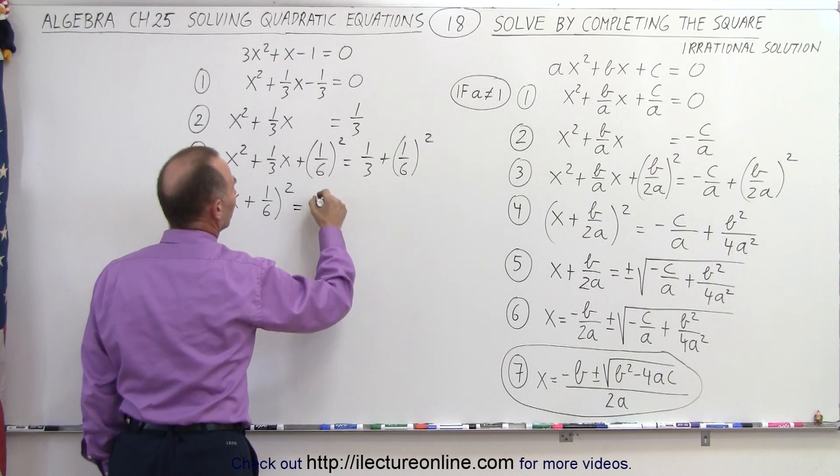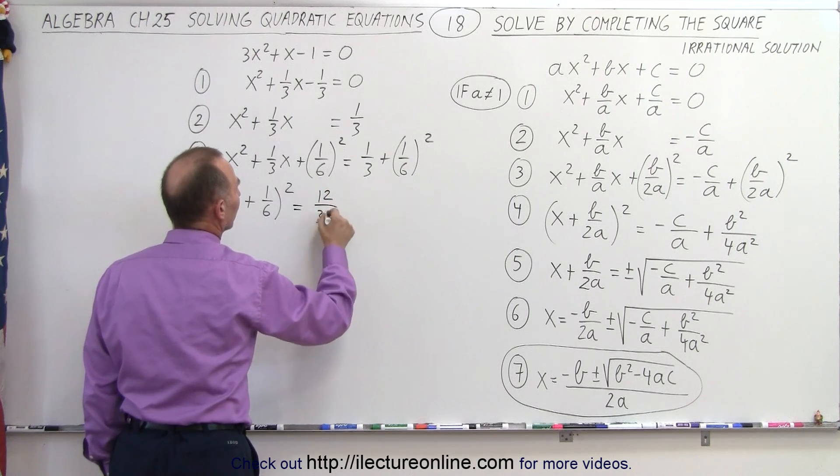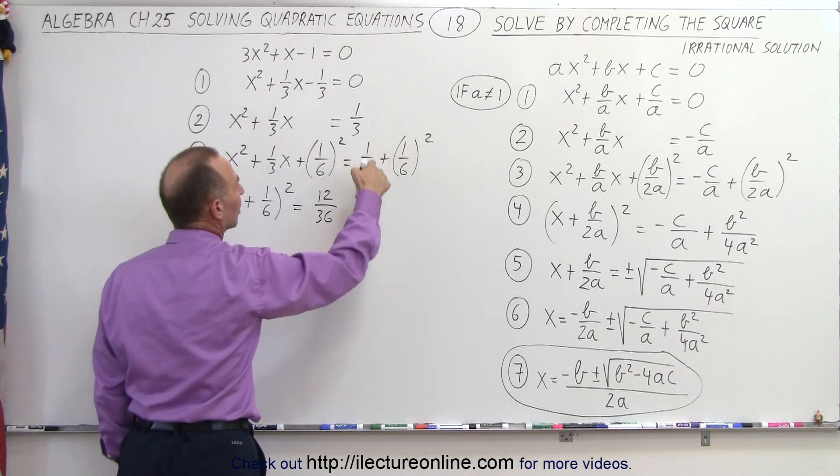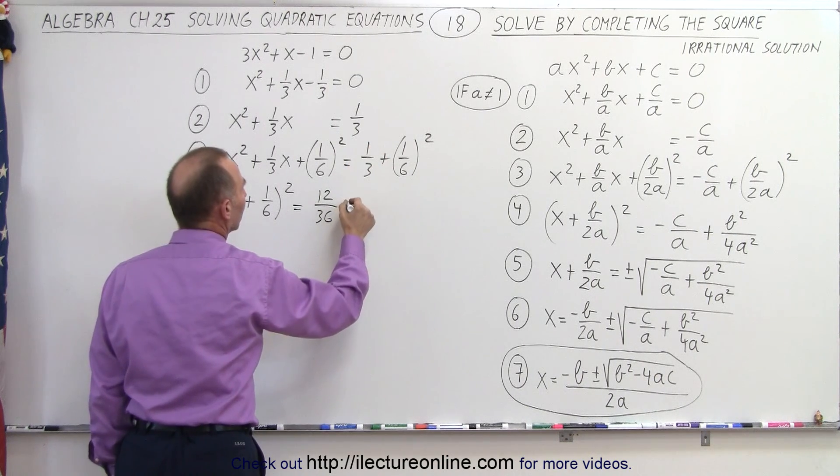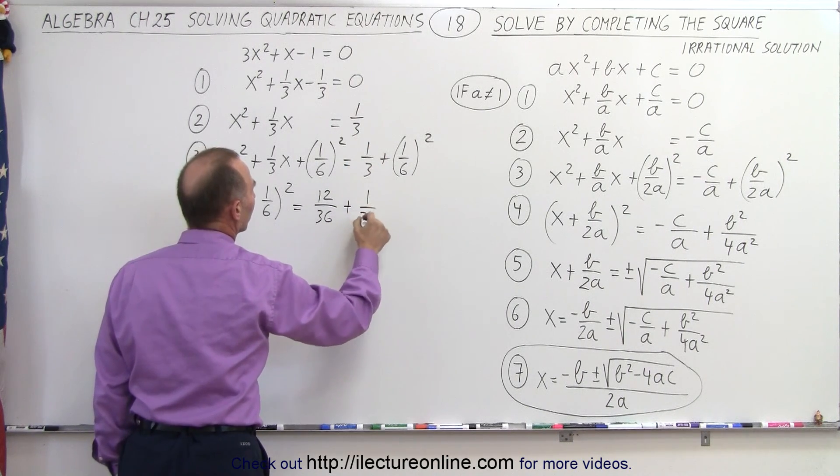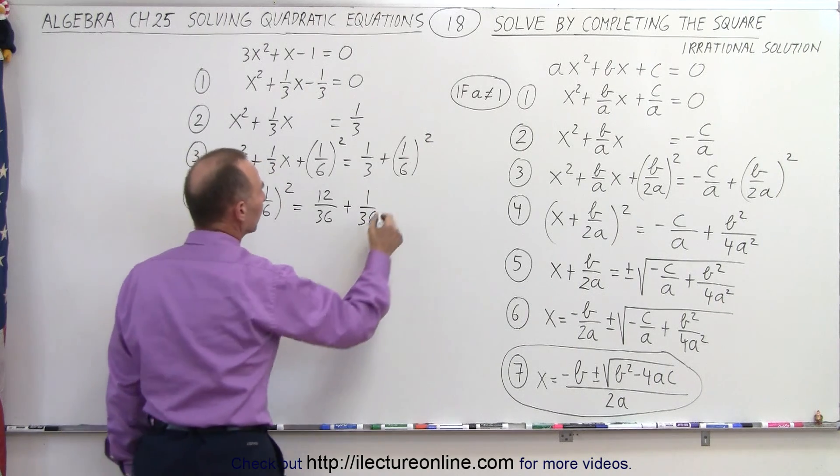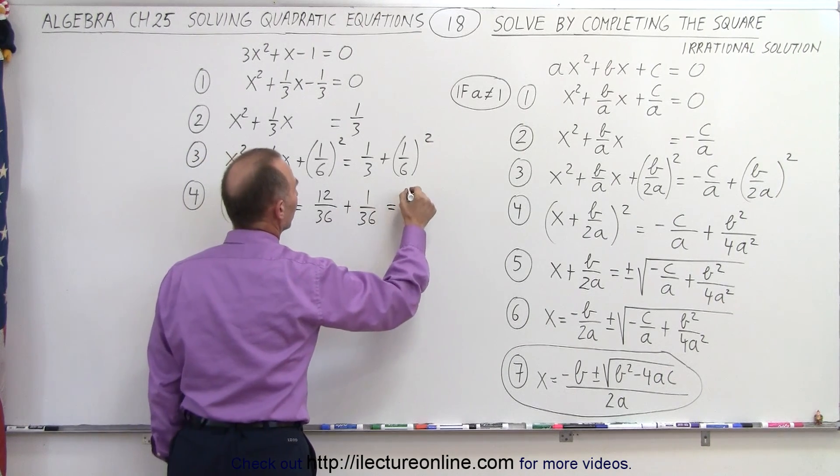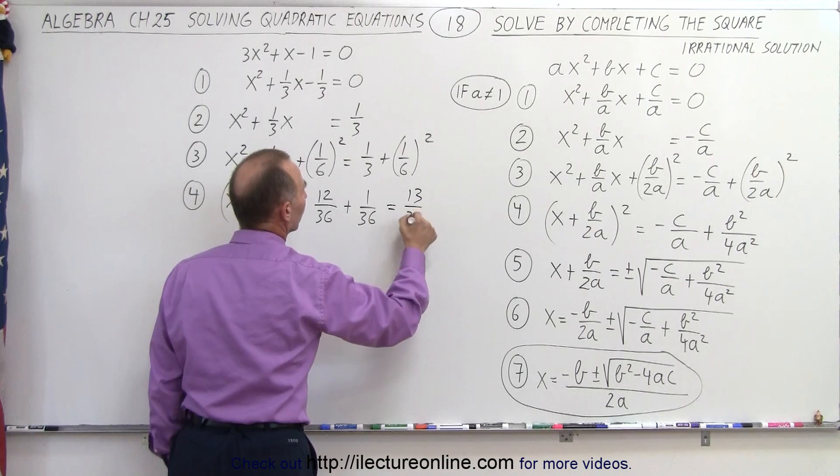x plus 1 over 6 quantity squared is equal to, that will be 12 over 36, by multiplying both the numerator and the denominator by 12. And we can then go plus 1 over 36. And of course, that is equal to 12 plus 1, which is 13 over 36.